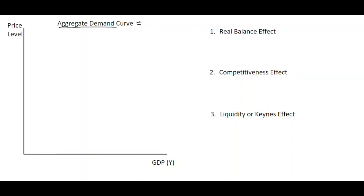The spending can come from five different areas. The first one is consumption — household expenditure. The second one is related to firms and investment. The third one relates to the government and government spending on capital and new goods and services. Plus we have exports represented by X and minus imports represented by M.